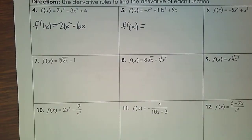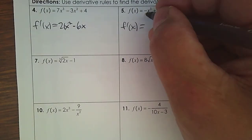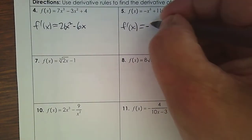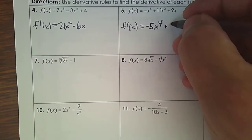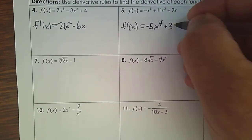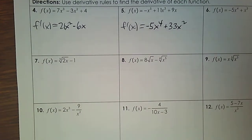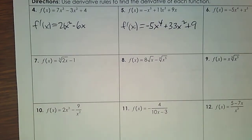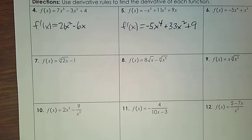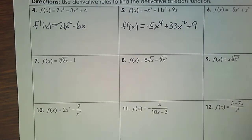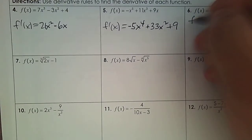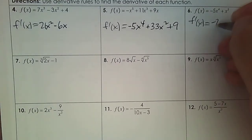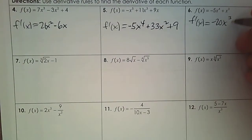Next one — the derivative, far simpler than limits. 5 times negative 1, subtract 1. 3 times 11, subtract 1. And the derivative of 9x is 9. Number 6: negative 20x cubed plus 3x squared.